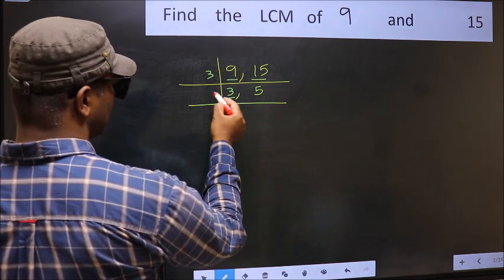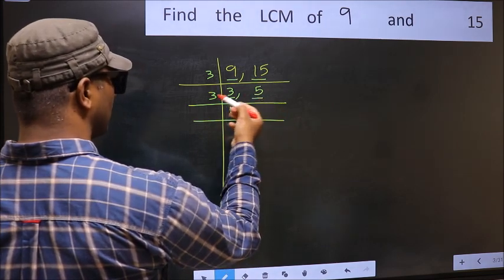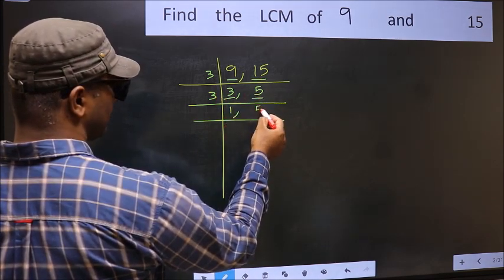Now here we have 3. 3 is a prime number, so 3 divides 3. The other number, 5, not divisible by 3, so you write it down as it is.